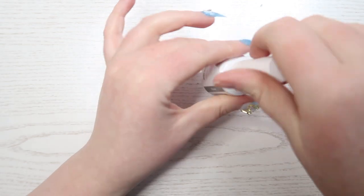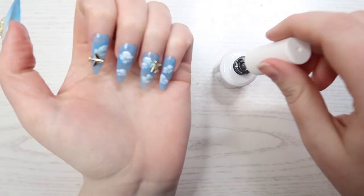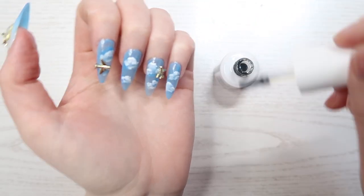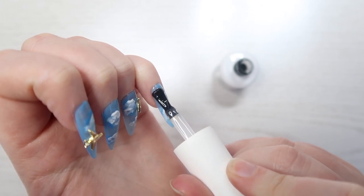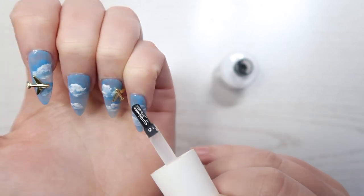So when the final airplane charm is on there, I am going in with the non-wipe topcoat and apply it over all the nails.